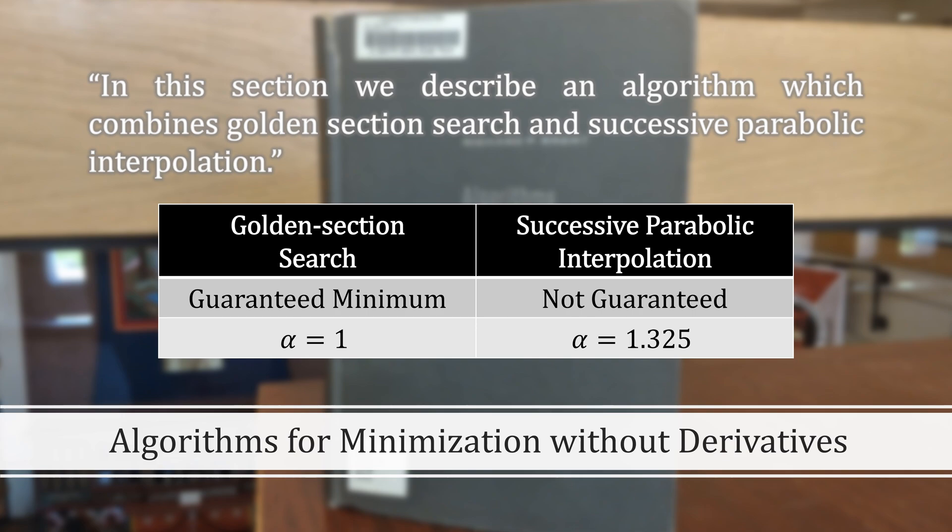Meanwhile, successive parabolic interpolation isn't guaranteed to converge but when it does, it will do so quickly with an order of 1.325. By combining them, we get the best of both worlds.